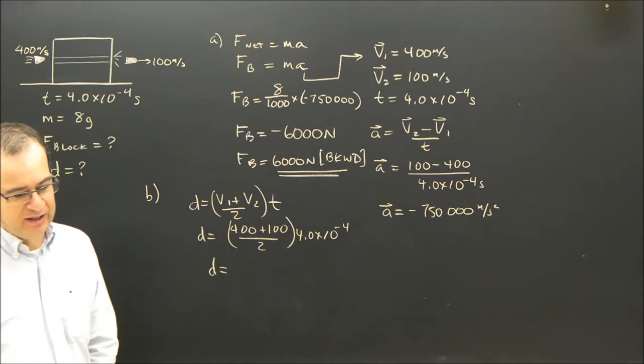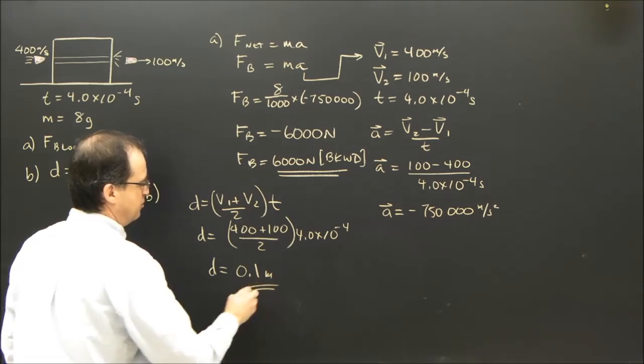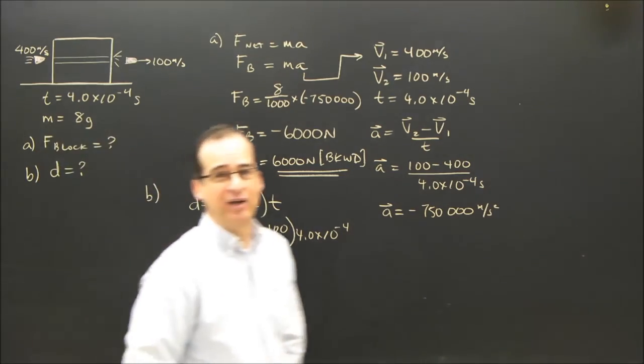So the displacement or the thickness of the wood is 0.1 meter thick. Okay? There you go.